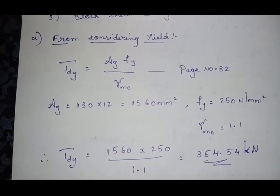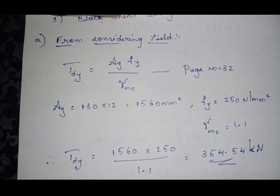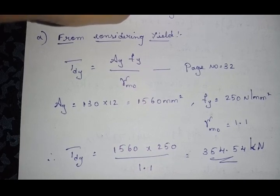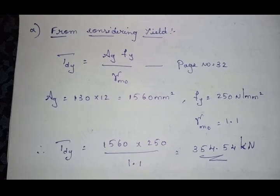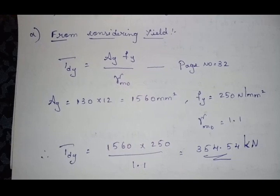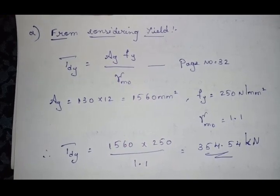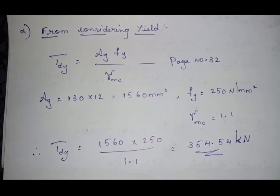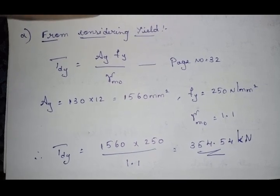Tdg = Ag·fy / γm0. The gross area Ag = 130 × 12 = 1560 mm². fy is 250 MPa (assumed for Fe410). γm0 = 1.1 and γm1 = 1.25. Substituting these values, Tdg = 354.54 kN. So this plate can carry 354.54 kN in yielding.